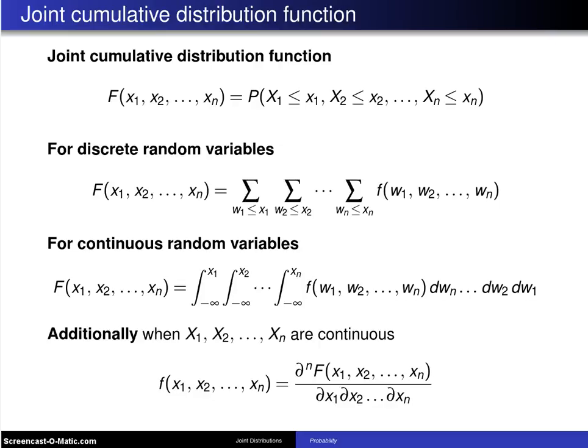Just as there are joint cumulative distribution functions for two random variables at a time, that is, bivariate distributions, there are also cumulative distribution functions for n random variables at a time, and those are known also as joint cumulative distribution functions.